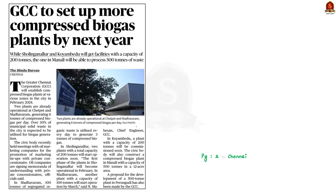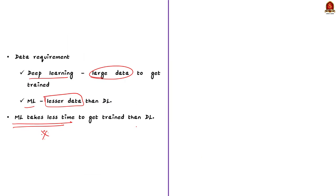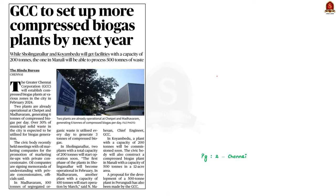So, in this discussion we saw some basic information about machine learning, deep learning, and the main differences between them. Now let us move to the next topic.